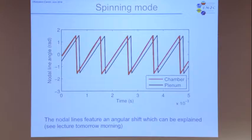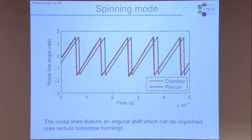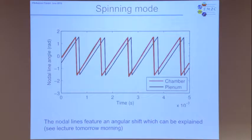So this is the spinning mode. What's interesting — and we were surprised by this — is that when you plot the position of the nodal line inside the chamber and inside the plenum, they are not aligned. In fact, there is an angle between both. This nodal line moves around, but in the plenum it is at a distance from the chamber nodal line.